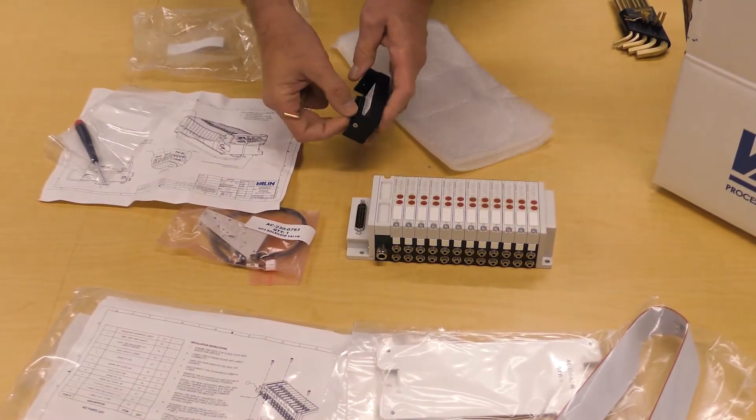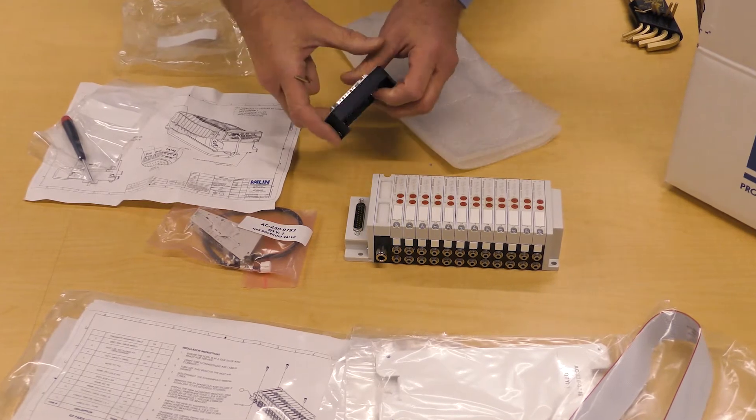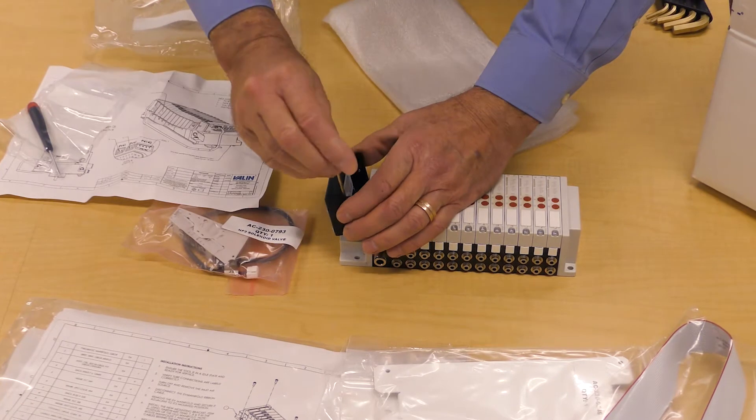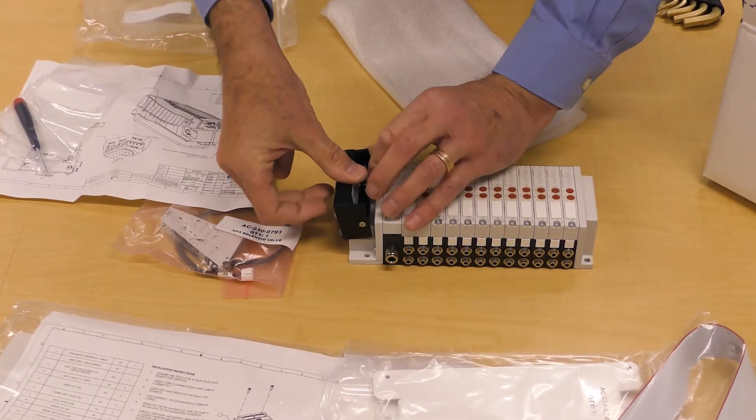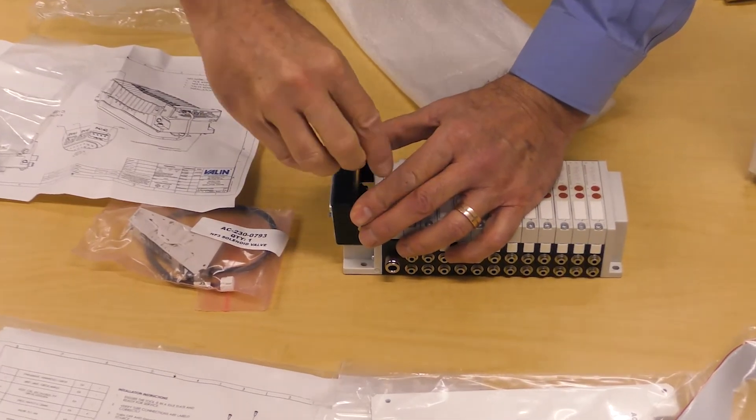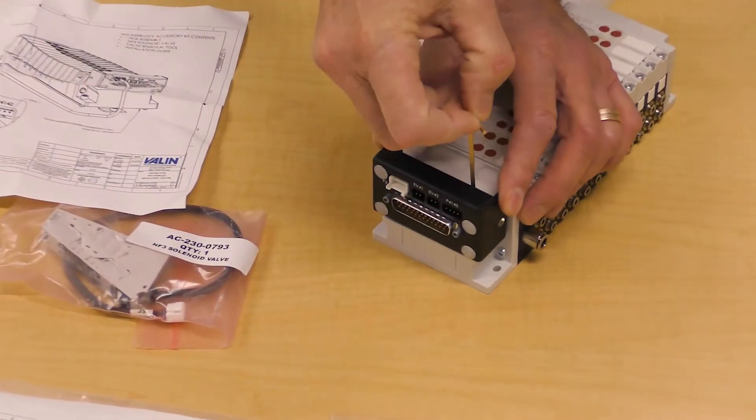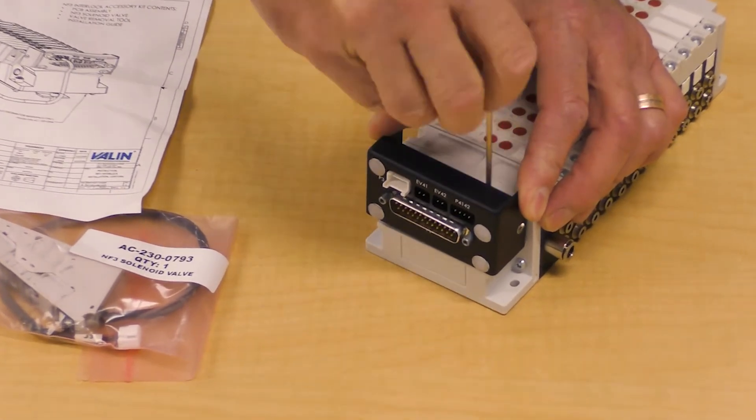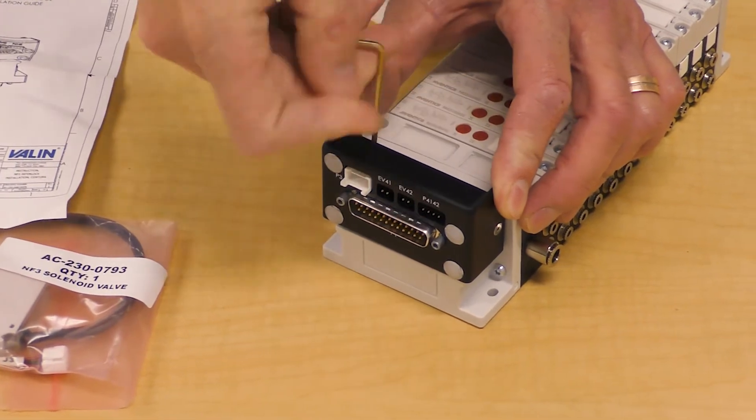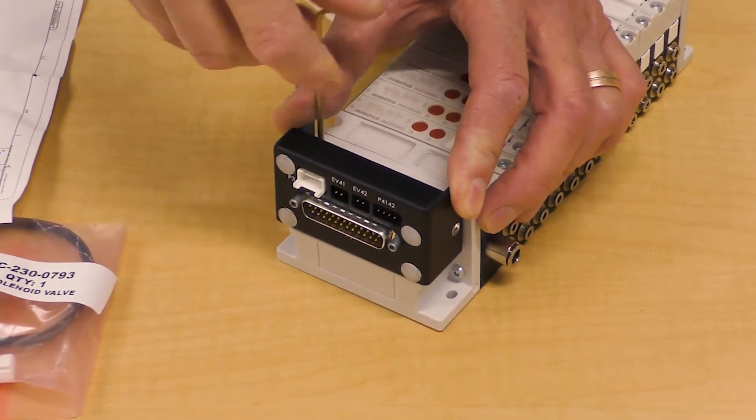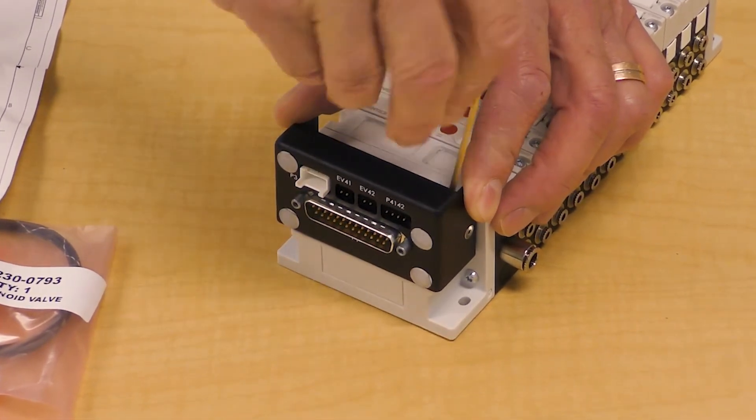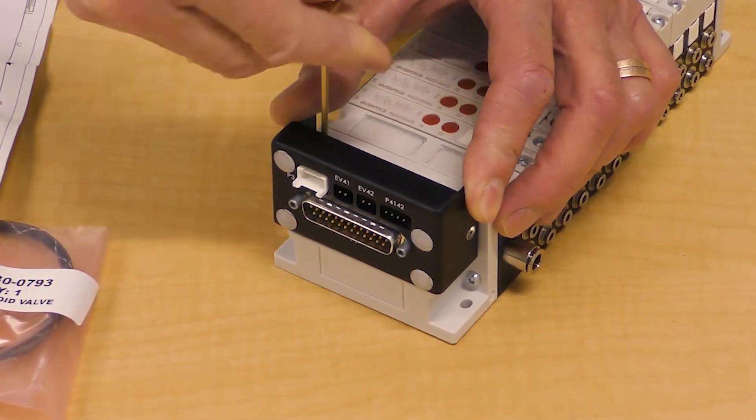I'm using a 3/32 Allen key driver and I'm going to install my NF3 interlock kit. I'm going to tighten the screws evenly as I go on both sides to draw the connector down into the socket.